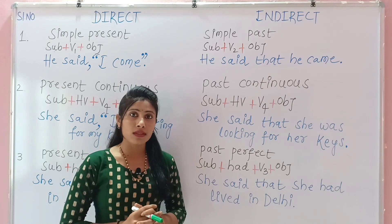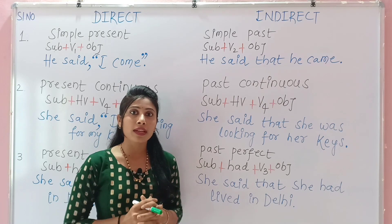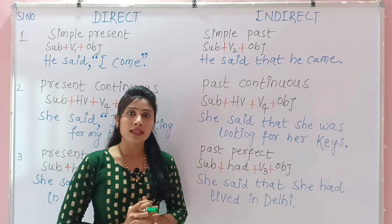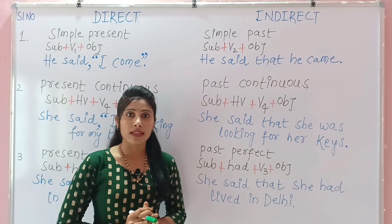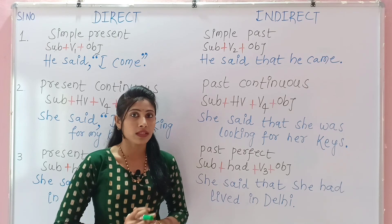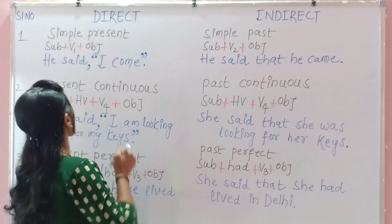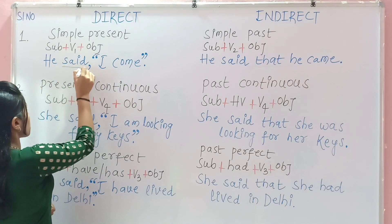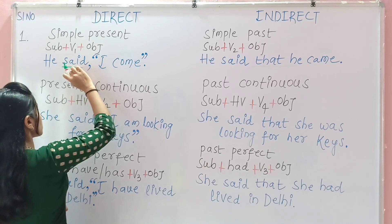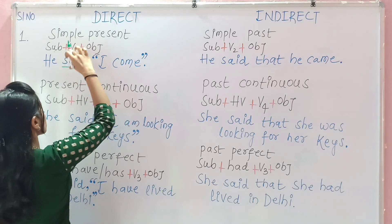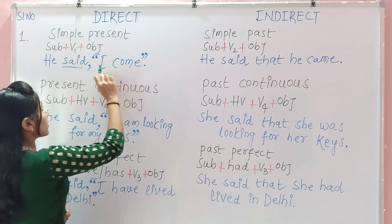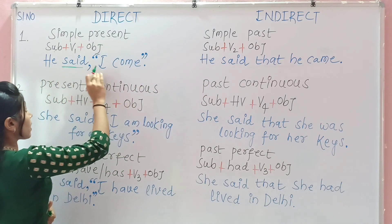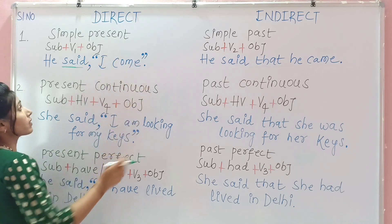There are some situations where we should absolutely not change the tense. The first one is: if the reporting verb is in the present or the future tense, the tense of the direct speech does not change. For example, 'He said, I come' — here 'has said' is the reporting verb and it is in past tense. But if it is in present or future tense, the tense does not change. For example: 'He says, I come' becomes 'He says that he comes.'